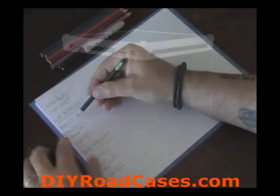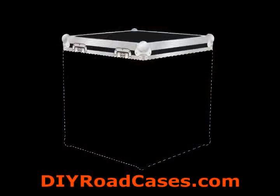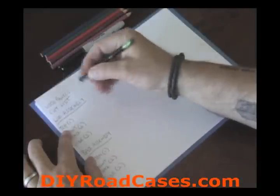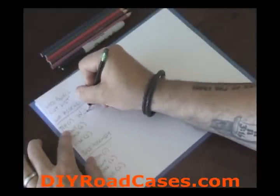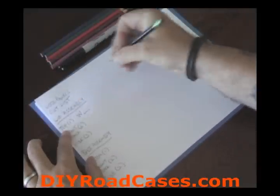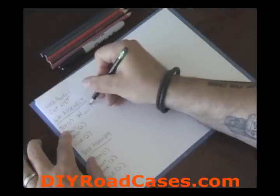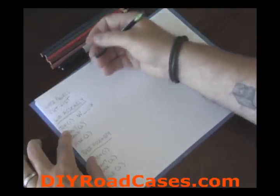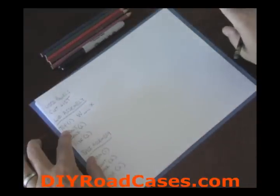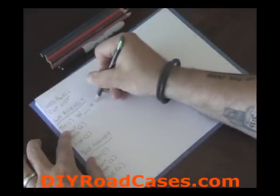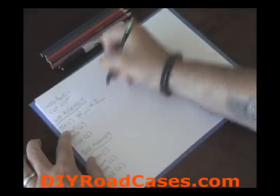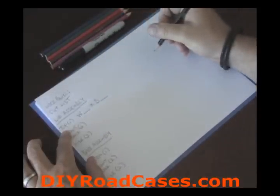For the lid assembly section, your top panel dimensions are width by depth — width because it goes left to right, and depth because it goes front to back. Leave those blanks with underlines to fill in later. Your front and back panels are width by height — left to right and top to bottom.